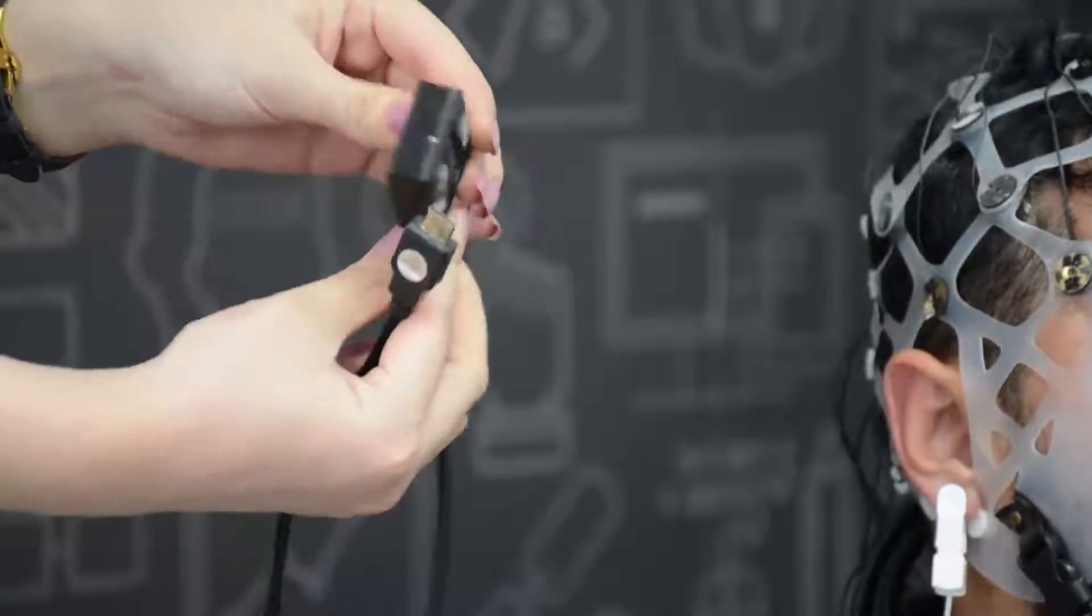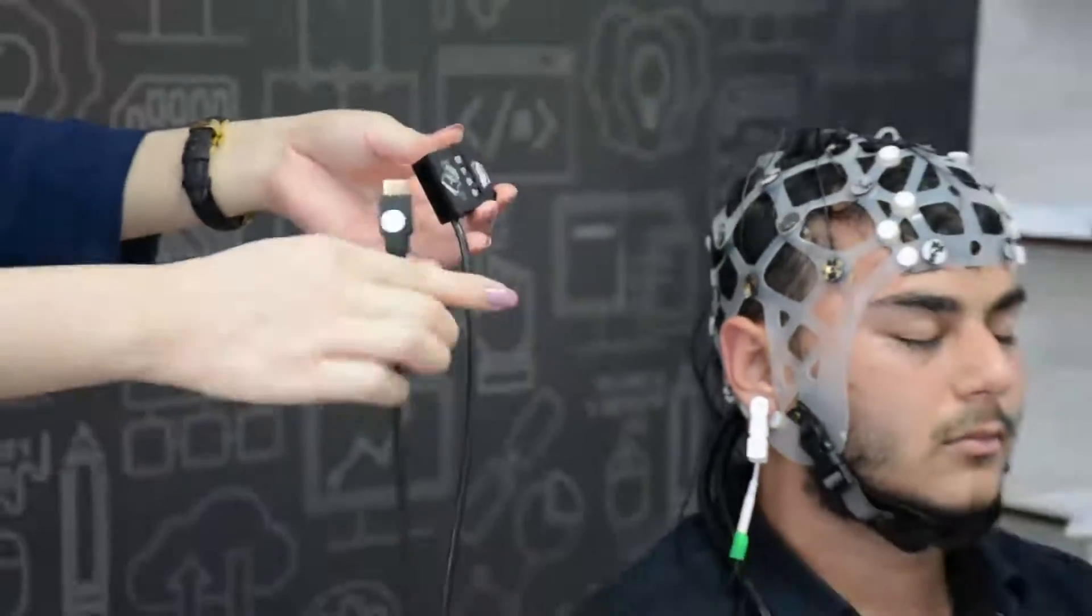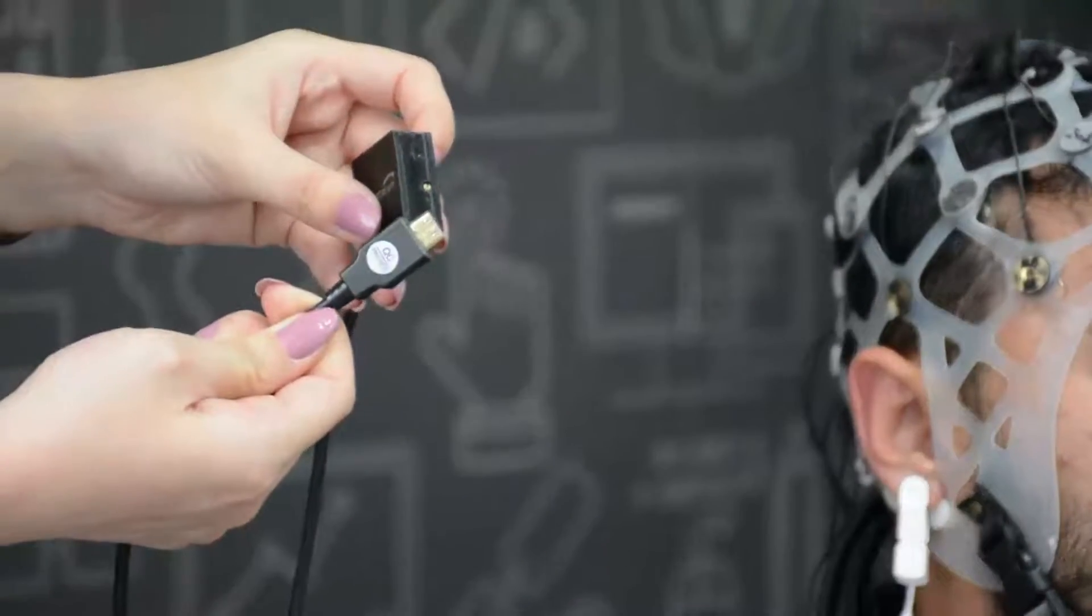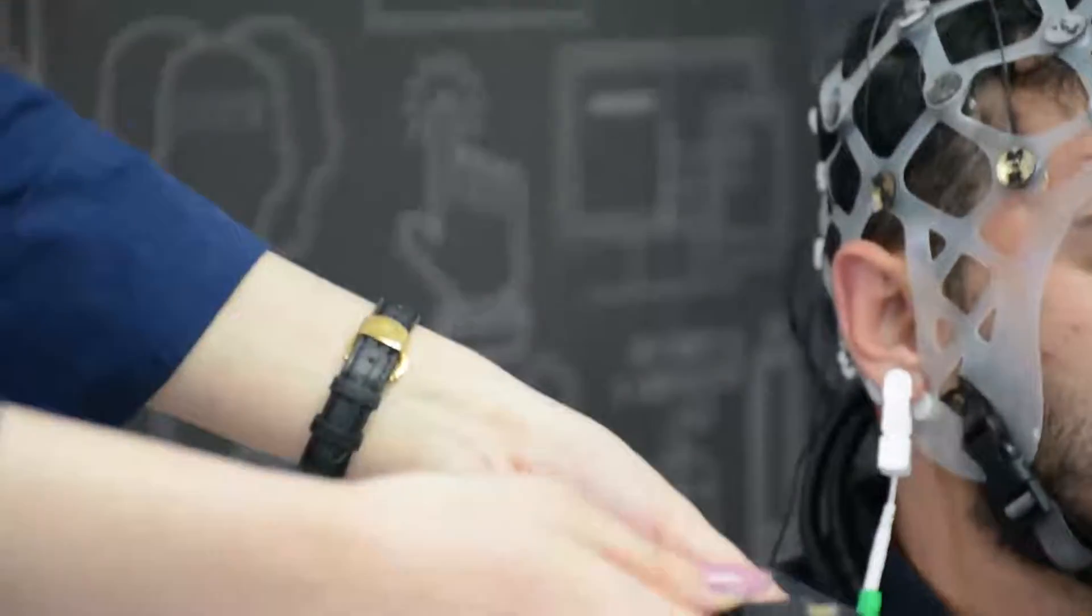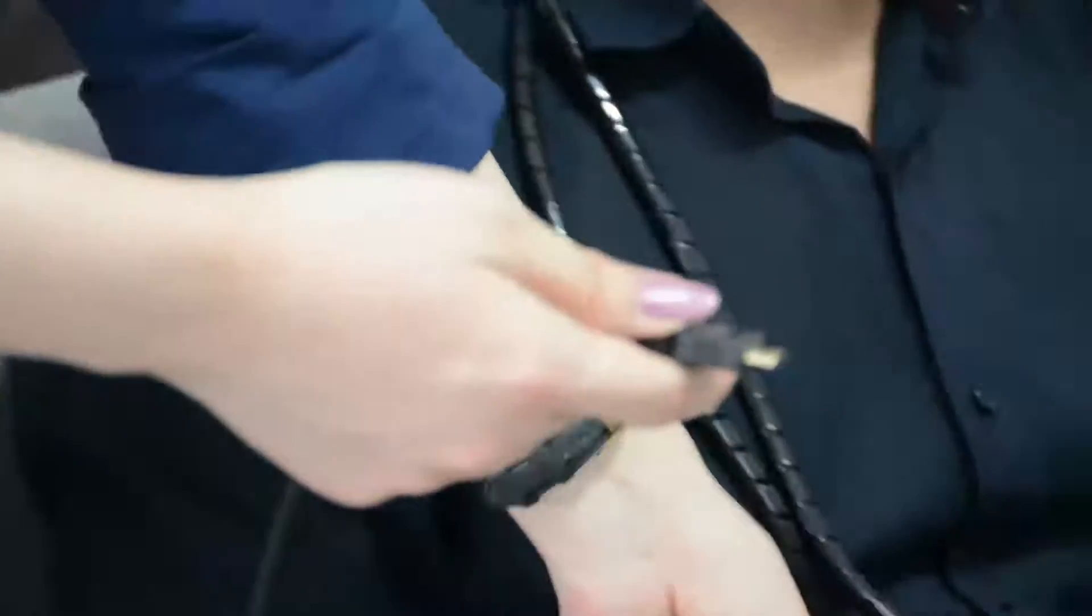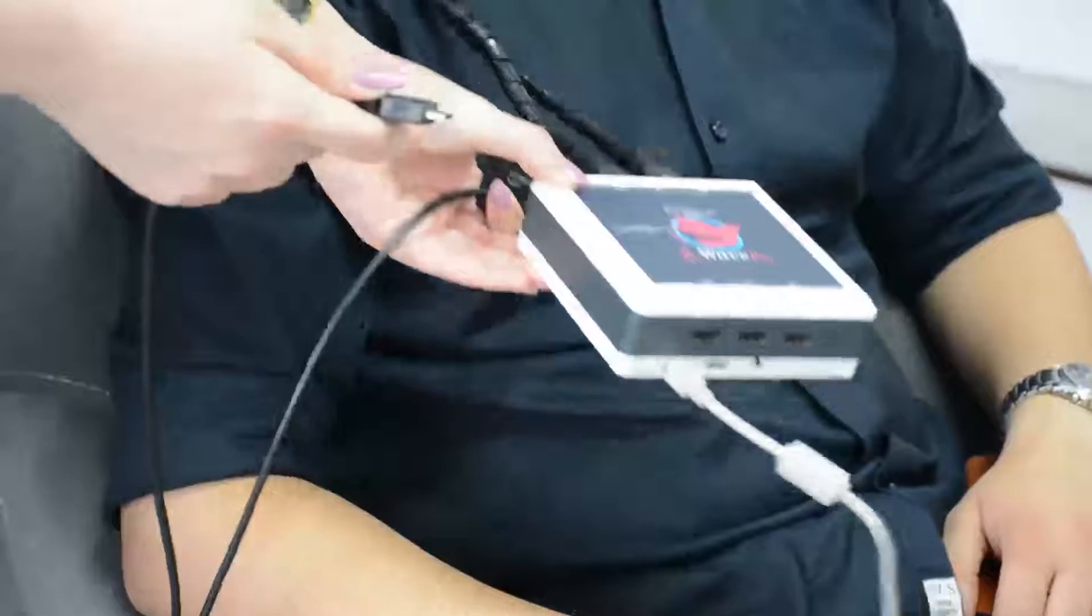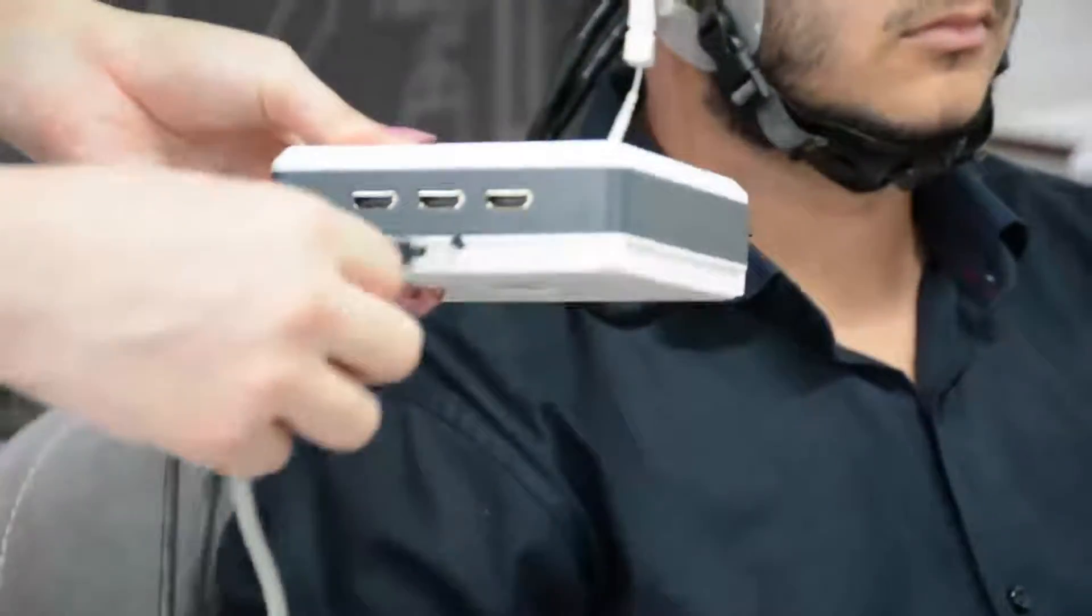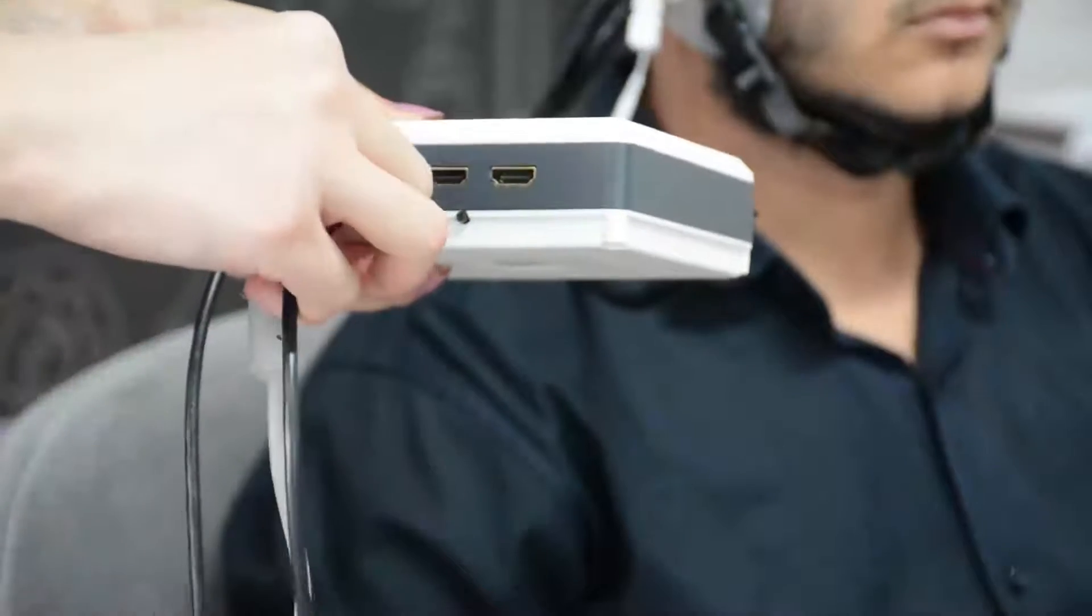We are going to run an ERP experiment using the Stroop color and word test in order to assess the ability to inhibit cognitive interference. Science Beam has offered a fantastic ERP sensor consisting of four LEDs which can record the trigger right at the moment it is sent to your system.